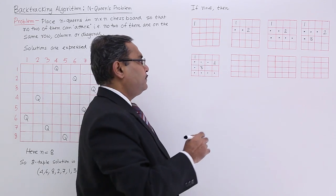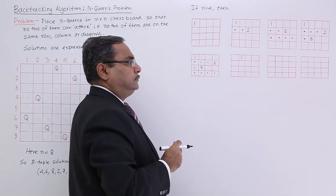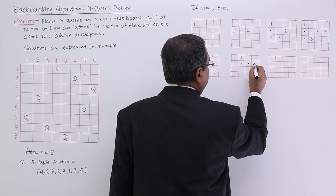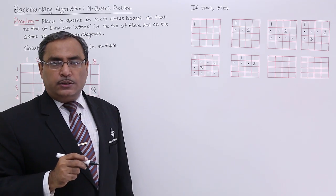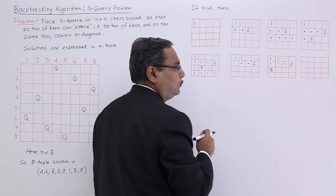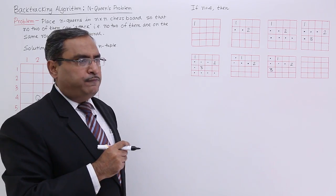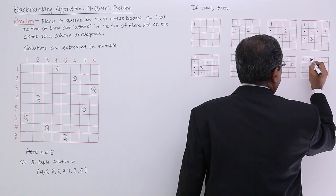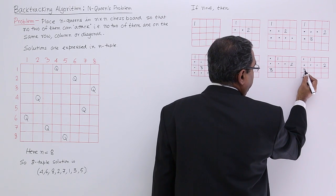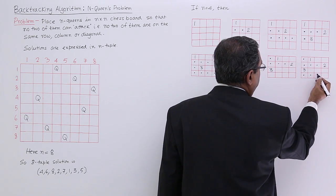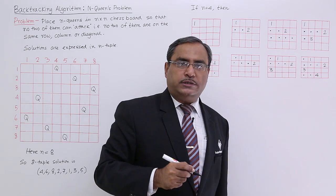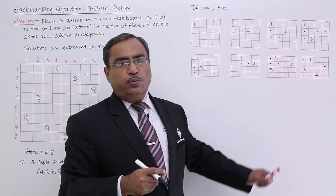Queen number 1 can be placed in a new position. If I place queen number 1 there, queen number 2 cannot be placed in the first few cells, but queen number 2 can be placed in one valid cell. Queen number 3 can easily be placed. Then for queen number 4: some cells are invalid due to same column or diagonal, but queen number 4 can be placed in the remaining valid cell. So this is one of the solutions.